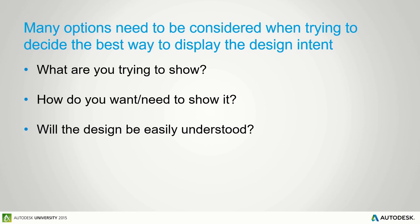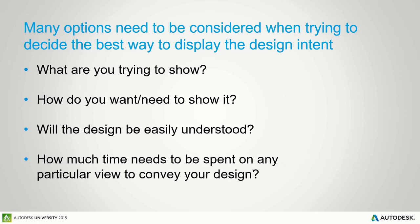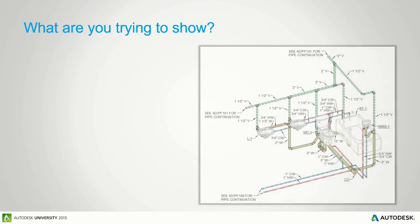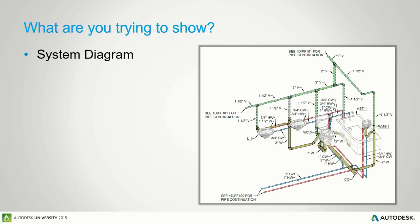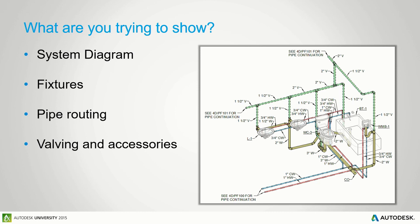Consider whether the design will be easily understood in a plan view versus using an ISO to clearly convey what you're trying to do for a particular system. Also consider how much time needs to be spent on any particular view — is it faster to cram plan notes on an eighth-inch scale plan, or faster to create an additional drawing that has everything on it? For plumbing ISOs, we're looking at the system diagram, overall fixture layout, general pipe routing, valving, accessories, and all the notes and tags that describe the system so it can be constructed in the field.